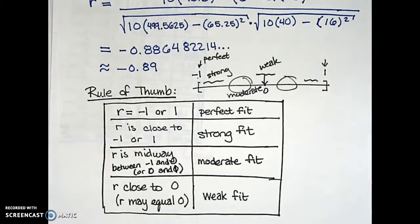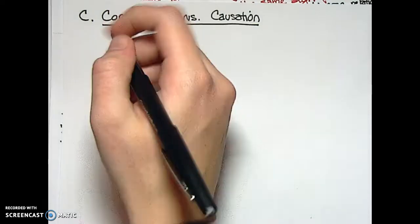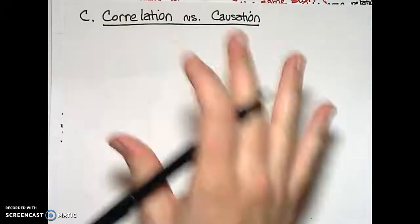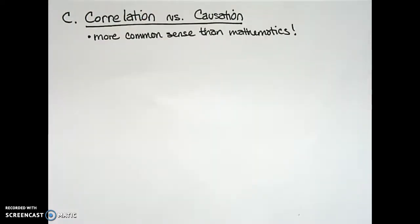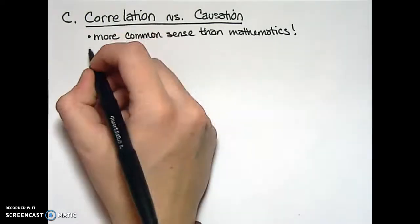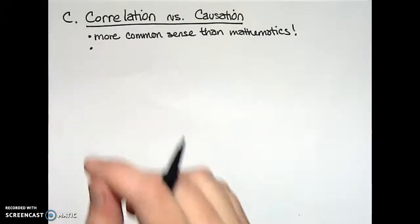We now seek to answer the third question: are the two quantities coincidentally related (correlated) or expectedly related — is there actually a causal relationship? This moves us to correlation versus causation. The key point here is perhaps the most important thing to know, and it's more common sense than mathematics. Just because r is close to one or negative one does not mean that one quantity causes the other to happen.